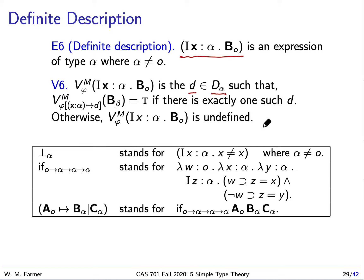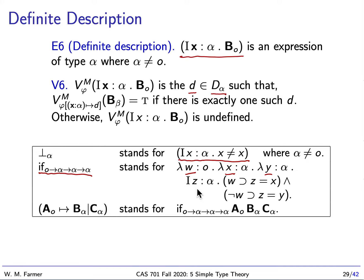Now we can define some new notions using notational definitions. We can have bottom alpha — basically a canonical expression that is undefined of type alpha. It's just this formula: the unique X such that X does not equal X. Well, there is no such unique X. We're also going to define an if-then-else expression. It takes something of type Boolean, something of type alpha, and another thing of type alpha. It's the unique Z of type alpha such that: if W is true, Z equals X, and if W is false, Z equals Y. And then we can use this notation for our if-then-else expression — basically it says if A, then B, else C.